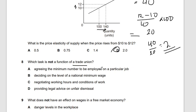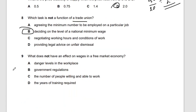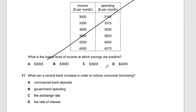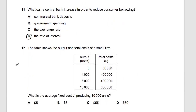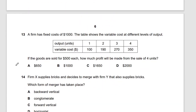Question nine: what does not have an effect on wages in a free market economy? Danger levels are correct — more dangerous jobs lead to higher wages. However, government regulations should not matter in this context. The answer points to government regulations. Question ten on the central bank is the same as version one — the answer is the rate of interest.